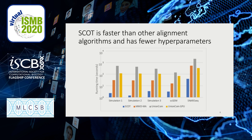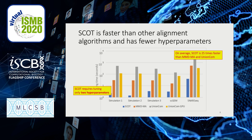You can see this in our plot of running times — note this is a log plot, so the differences are more extreme than they might first appear. Looking at SCOT, MMDMA, UnionCom, and the GPU version of UnionCom, on average SCOT is about 25 times faster than the other two methods. Additionally, SCOT only has two hyperparameters, whereas MMDMA and UnionCom both have four, so we have a much easier time searching through hyperparameter space.